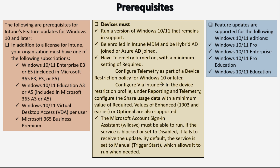We also have to ensure that the Microsoft Account Sign-In Assistant must be able to run. This is a service, and if the service is blocked or set to disabled, the device fails to receive the update. By default, the service is set to manually trigger start, which allows it to run when needed.